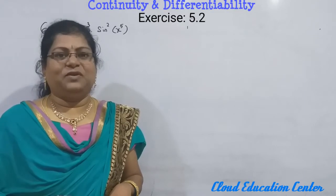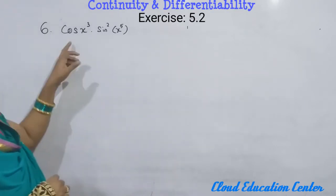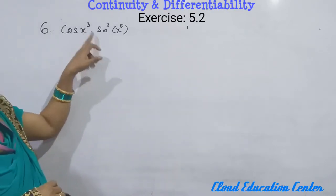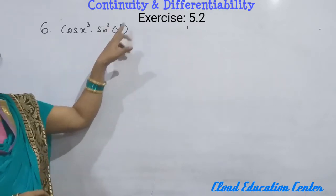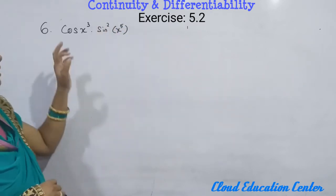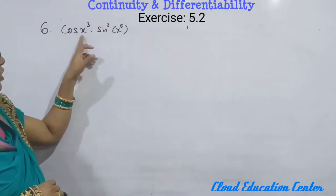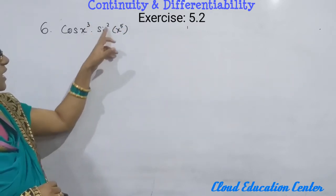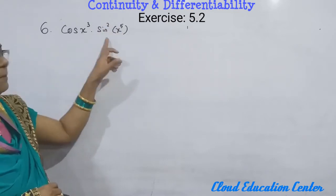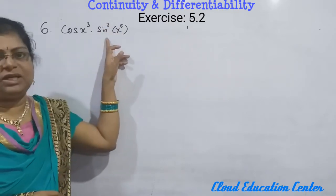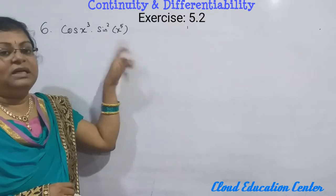Hello everyone, we will solve this sum. They are given cos(x³) into sin²(x⁵). Here cos(x³) and sin²(x⁵) both combine with multiplication, so we have to use the product rule first.